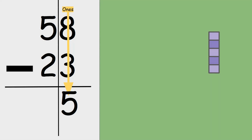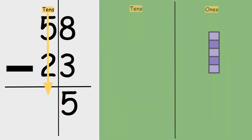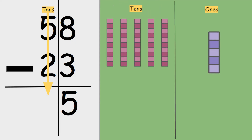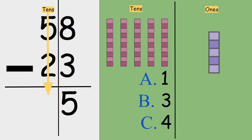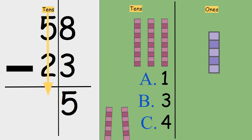And now for the tens: five minus two. Is the answer one, three, or four? Five take away two is three. Let's try one last question — this time let's use three-digit numbers.